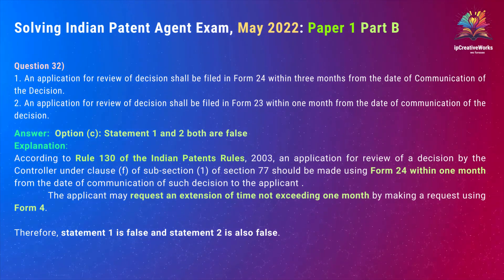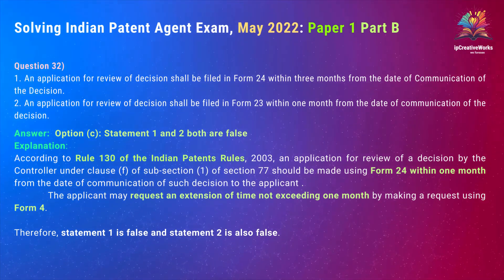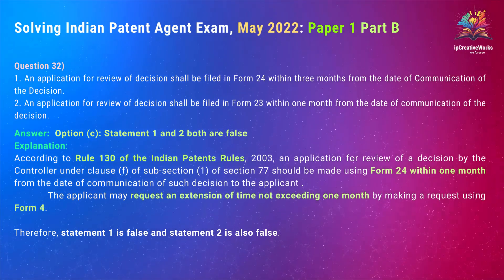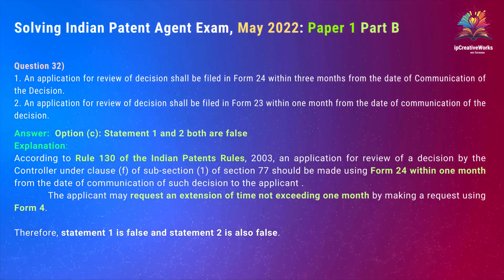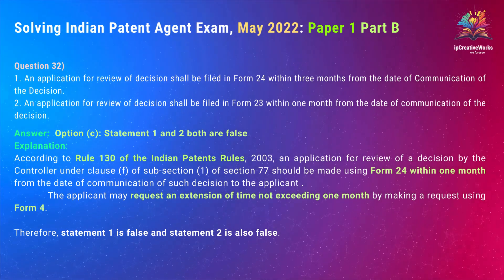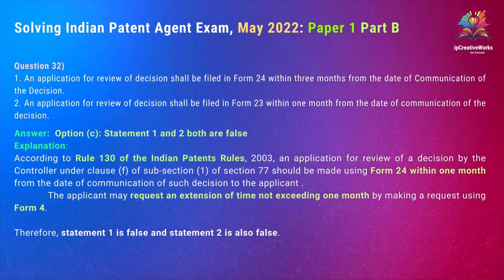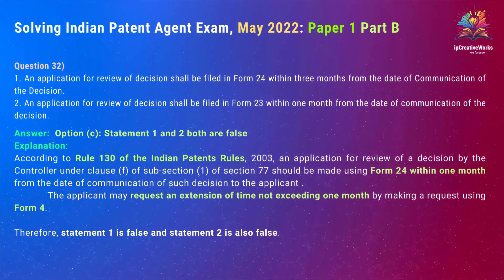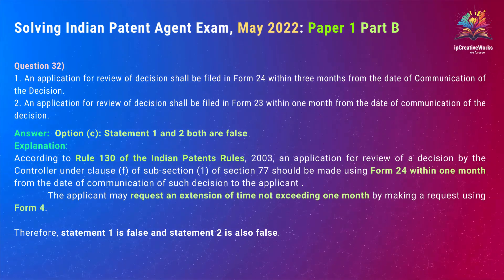Explanation: According to Rule 130 of the Indian Patents Rules, 2003, an application for review of a decision by the controller under clause (f) of subsection (1) of Section 77 should be made using Form 24 within one month from the date of communication of such decision to the applicant. The applicant may request an extension of time not exceeding one month by making a request using Form 4. Therefore, Statement 1 is false and Statement 2 is also false.